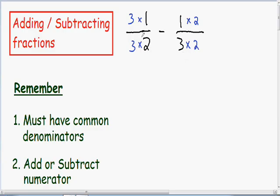Let's rewrite these fractions. In our first fraction, the numerator is 3 times 1, which is 3, and the denominator is 3 times 2, which is 6. Minus our second fraction: the numerator is 1 times 2, which is 2, and the denominator is 3 times 2, which is 6.